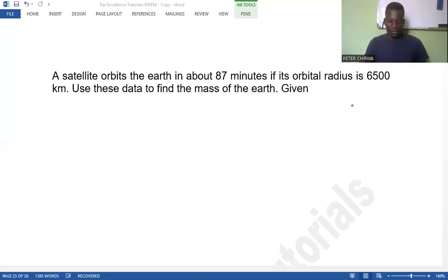So the question says: A satellite orbits the Earth in about 87 minutes. If its orbital radius is 6,500 kilometers, use this data to find the mass of the Earth.